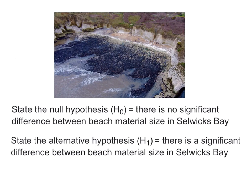So the first thing you do is you state the null hypothesis as you do with any statistical test. And our null hypothesis is this: There is no significant difference between beach material size in Selwick's Bay. And then we state the alternative hypothesis: There is a significant difference between beach material size in Selwick's Bay.